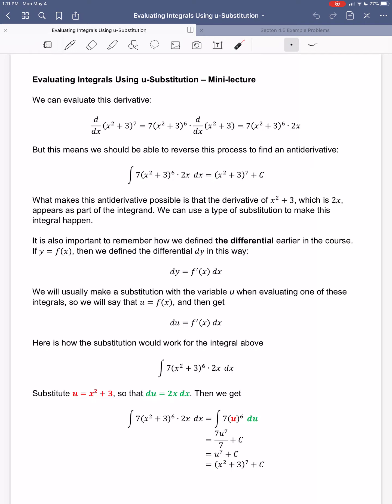But what really makes this work is the fact that if I take this x squared plus 3 as a function, we're going to want to call this g of x, then this 2x right here is g prime of x. So the derivative of x squared plus 3 appears as part of the integrand, as part of the thing that I'm integrating. We can use a type of substitution to make this integral happen then. It's going to be called a u substitution.